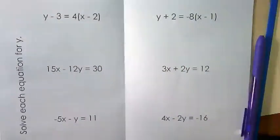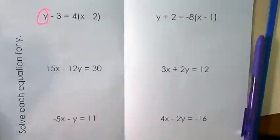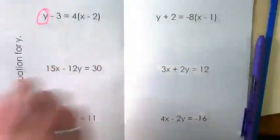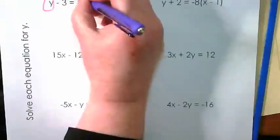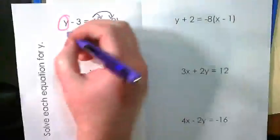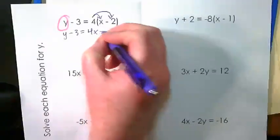So our first step is we're going to highlight the variable that we're solving for. Our second step is we're going to use the distributive property to get rid of any parentheses. So we'll rewrite this one as Y minus 3 is equal to 4X minus 8.